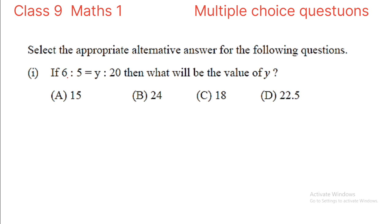First question: if 6 is to 5 equals y is to 20, then what will be the value of y? The options are 15, 24, 18, or 20. So, these two ratios are equal: 6 is to 5 equals y is to 20.